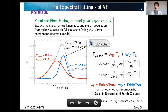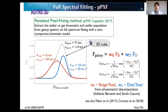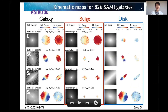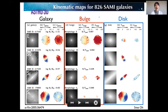We can also estimate the weights of the two components from the photometric bulge-disk decomposition. Using this information, pPXF simultaneously estimates the rotation velocity and velocity dispersion of both the bulge-and-disk components. Finally, I succeeded in decomposing bulge-and-disk components for 826 SAMI galaxies.